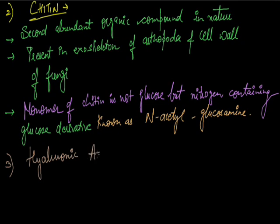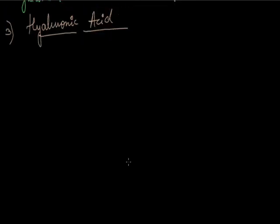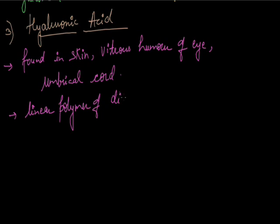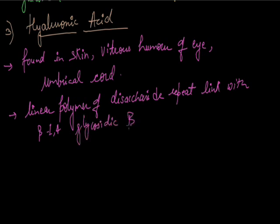Third is hyaluronic acid. Hyaluronic acid is found in skin, vitreous humor of eye, and umbilical cord. It is a linear polymer of disaccharide linked with beta 1,4 glycosidic bond.